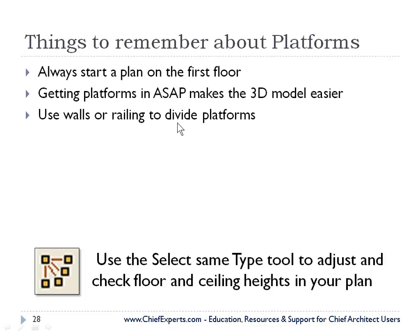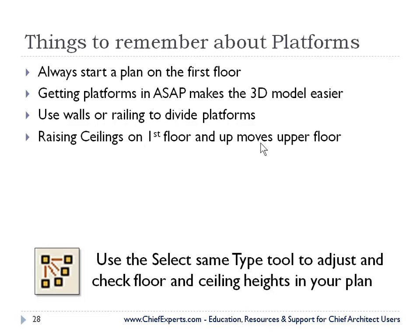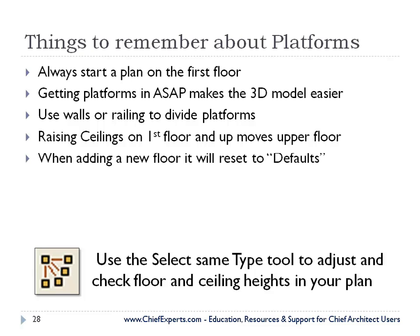Use walls or railings to divide the platforms. Raise the ceilings on the first floor and it moves the upper floors up or down depending on what you do. When adding a new floor after you've already raised your floors and ceilings, that new floor will automatically reset all the ceiling heights of the floor below, because it's going to put the new floor in at one height based on the default.